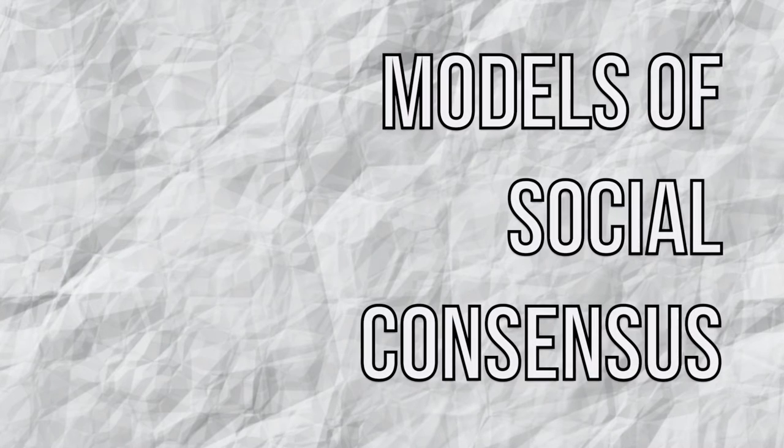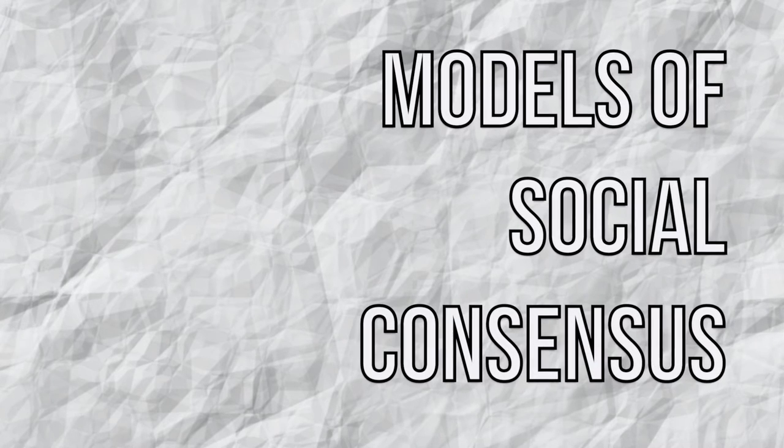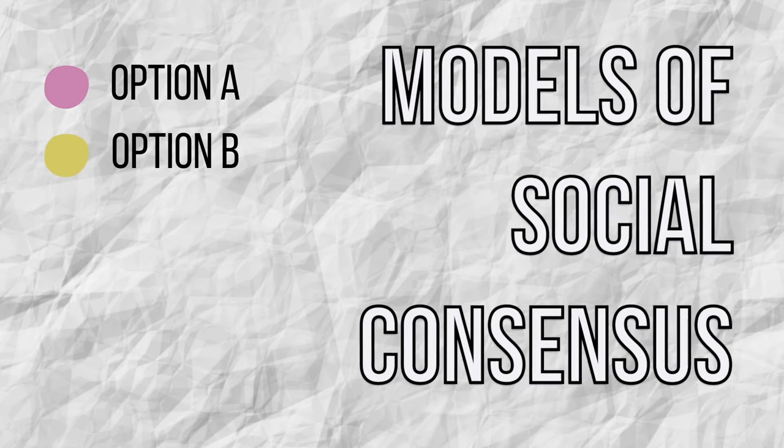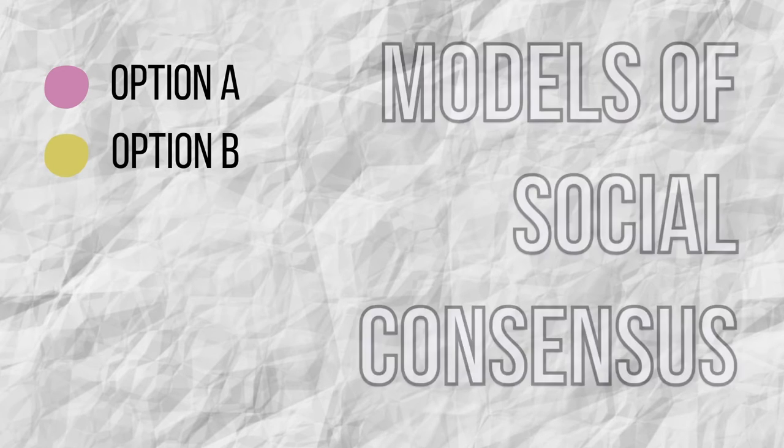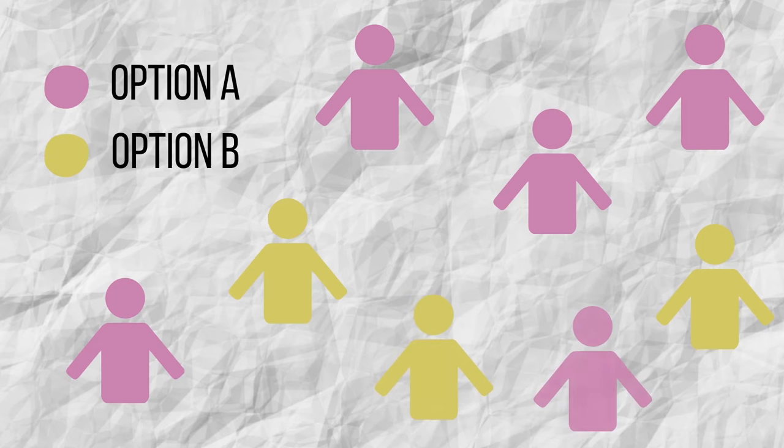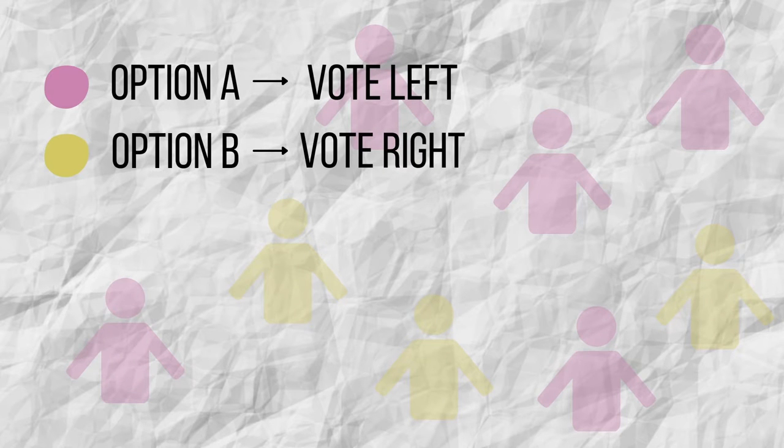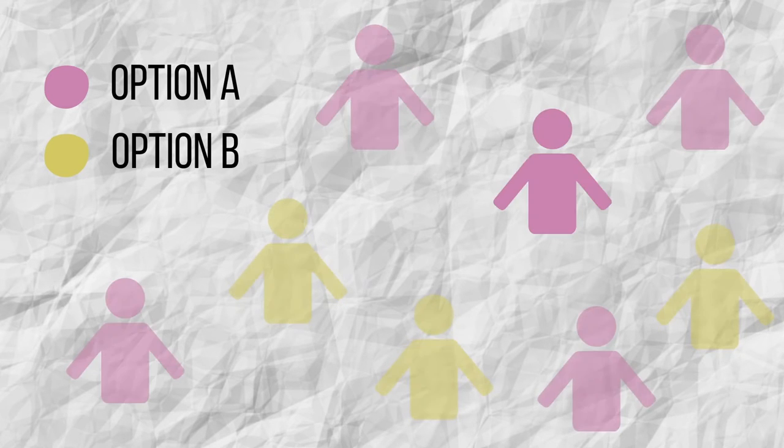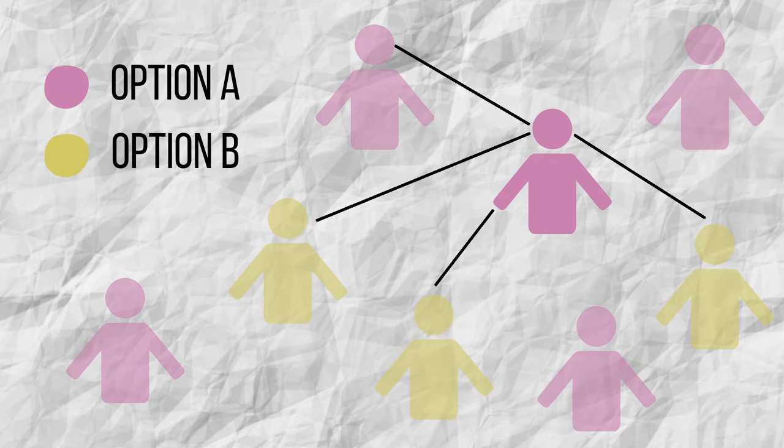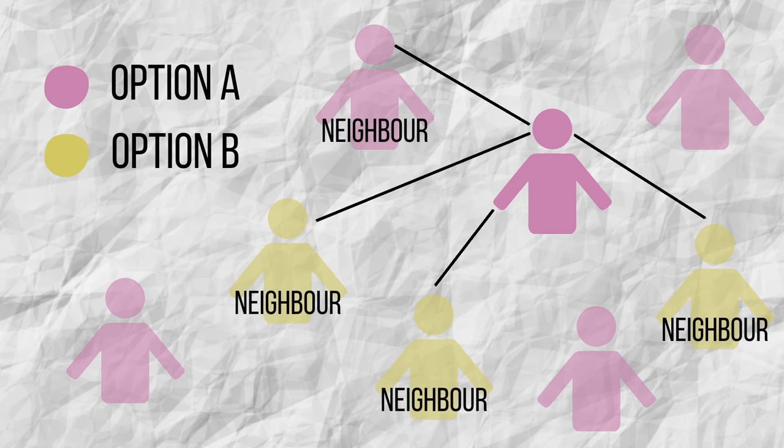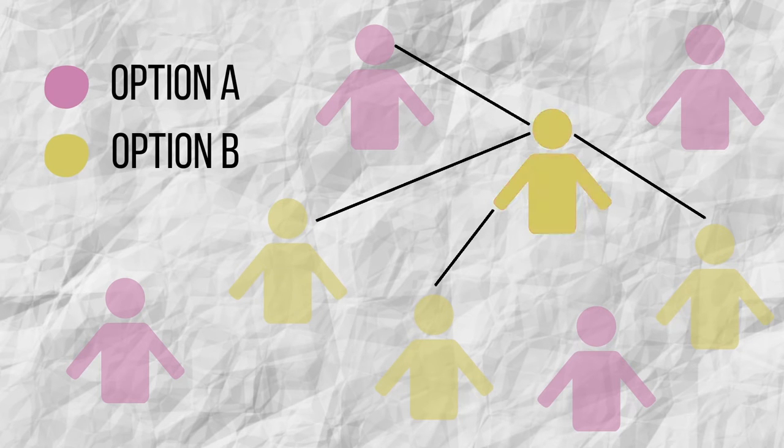We start with social consensus models. The most simple models consider that there are two possible options, option A or option B, on a given issue. Each person is characterized by the option he or she chooses. For example, the options could be to vote left or right. Everyone is related to a number of people, which from now on we will call neighbors. Depending on the choices made by his or her neighbors, the individual can change his or her choice.